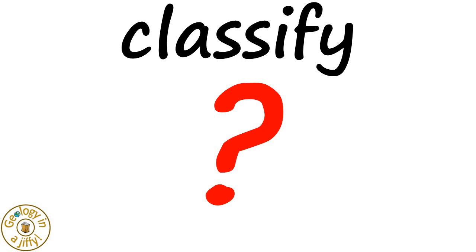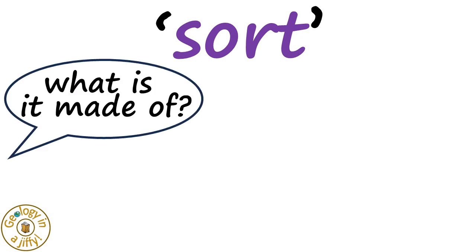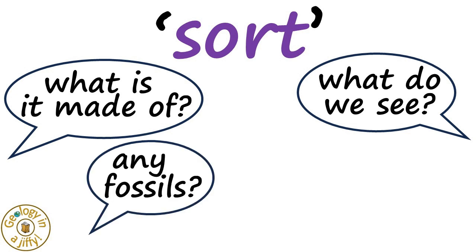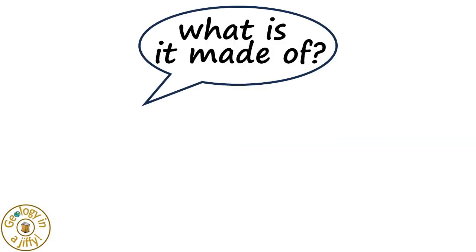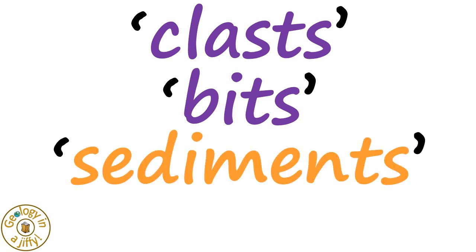But how do we classify a rock as sedimentary? The term classify means to sort, which we can do by answering questions such as: what is it made of, what do we see, are there any fossils in it, and does it react with acid? Sedimentary rocks are made of clasts — more simply known as bits of older rocks, also known as sediments — and when deposited, make clastic sedimentary rocks.